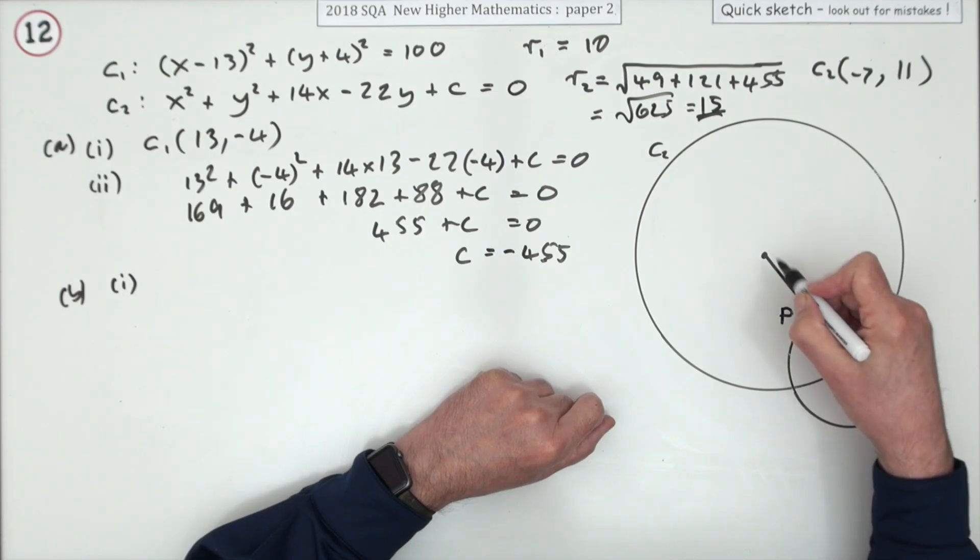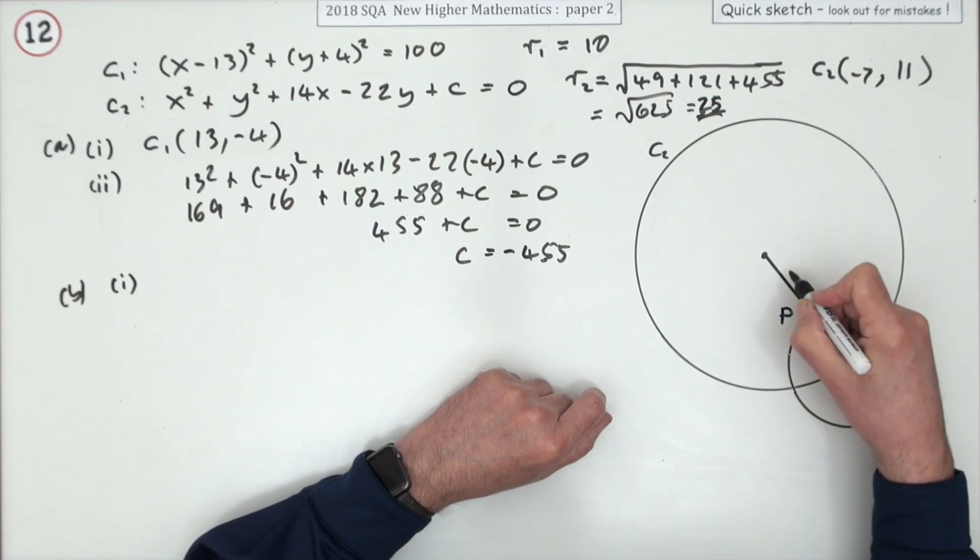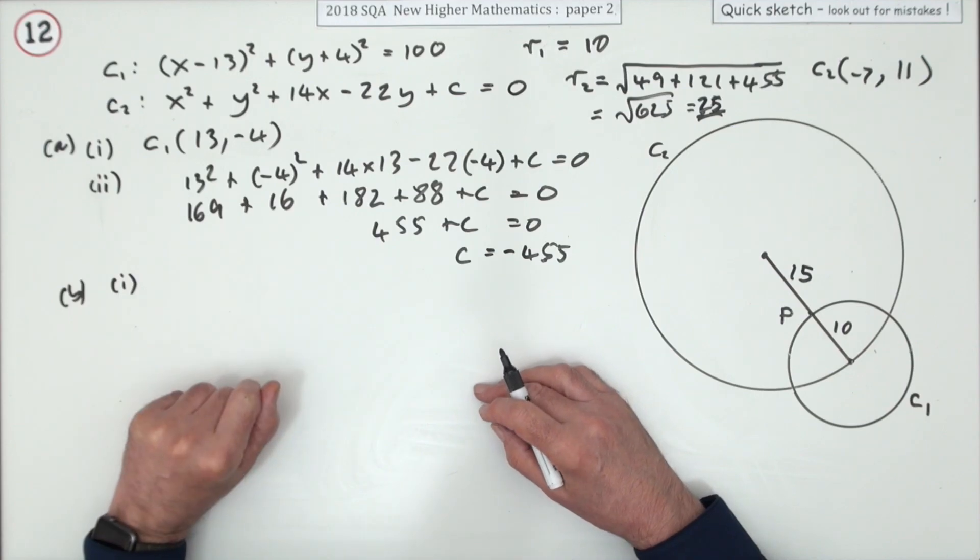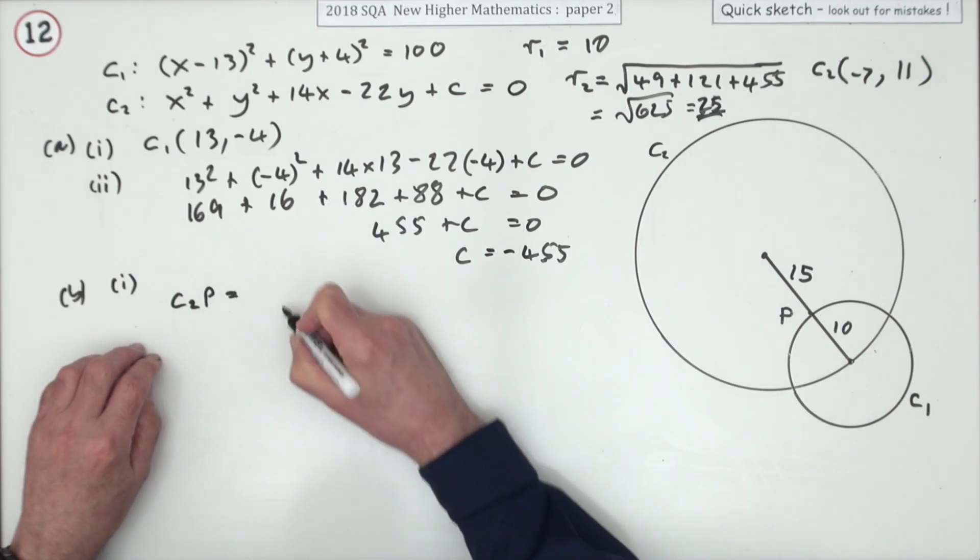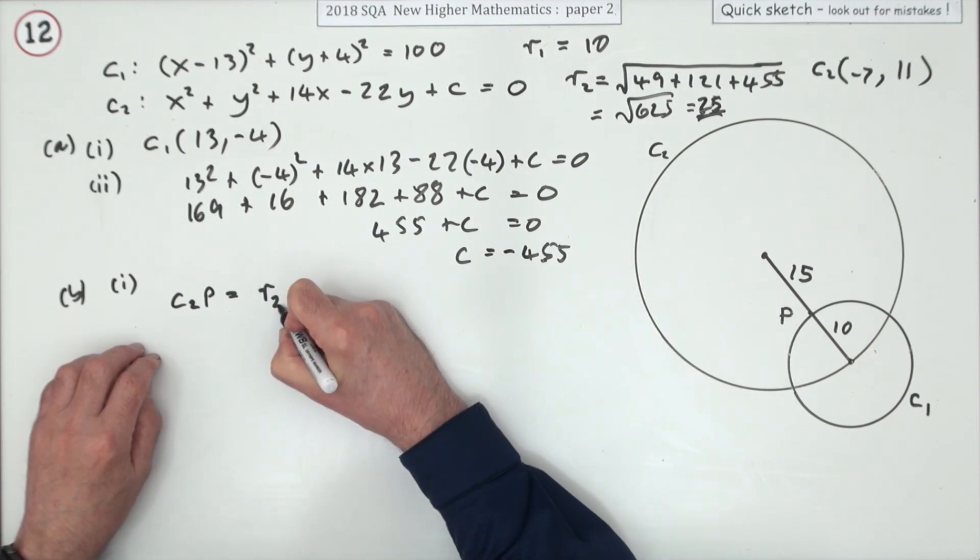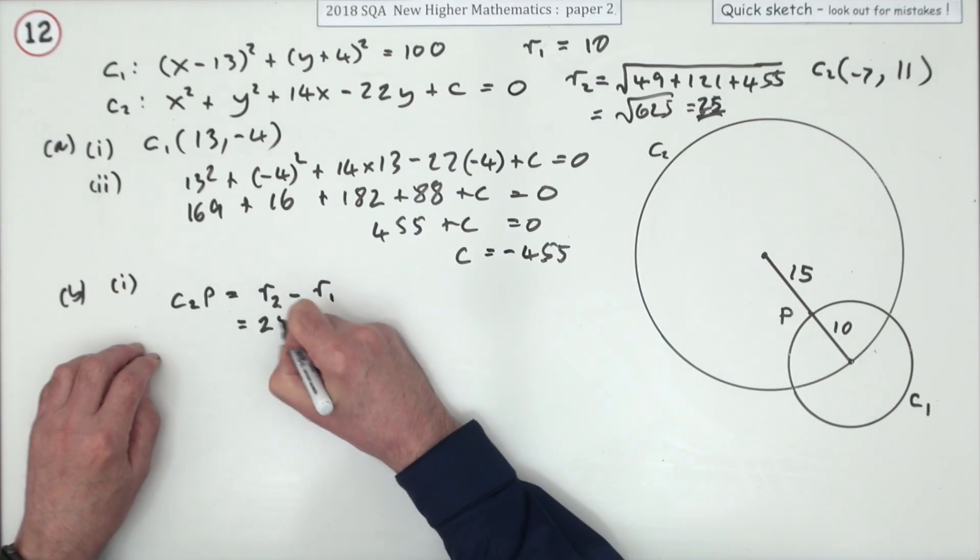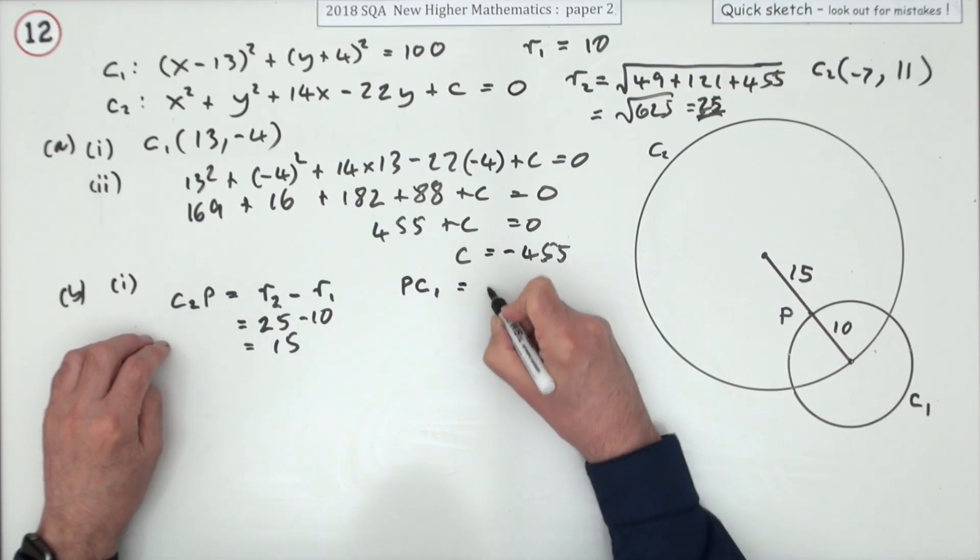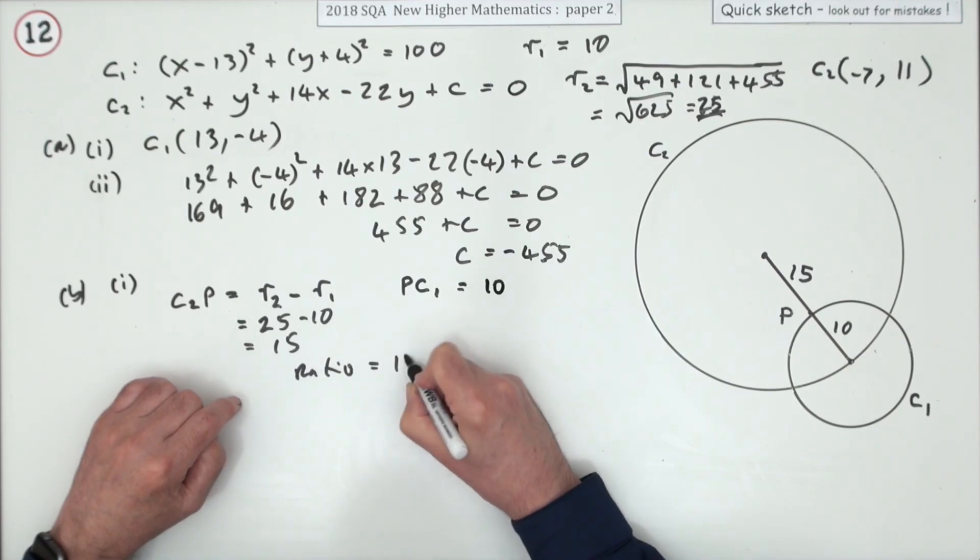That's quite a pile of numbers. That's 17 into 625, square root of 625, so that's 15. Well, that means that this part is 10, not 25. That part's 10 and that part's 15. C2 to P is the radius of circle 2 take away the radius of circle 1, so that equals 25 take away 10, which is 15. And P to C1 is the radius of the smallest circle, which is 10, so that means the ratio is 15 to 10, so that's 3 to 2.